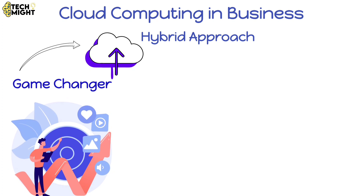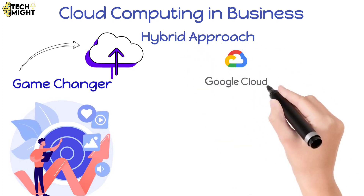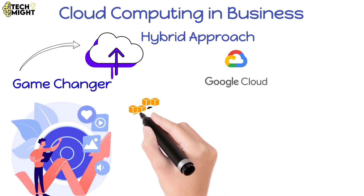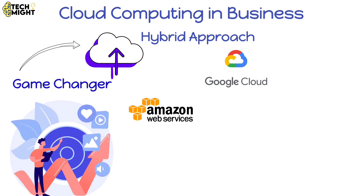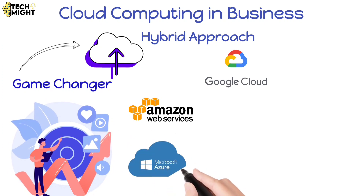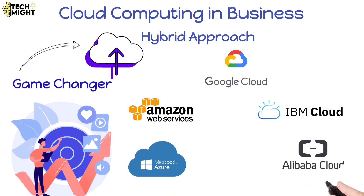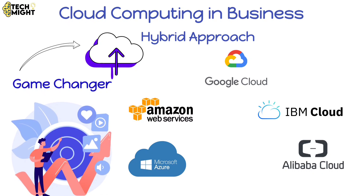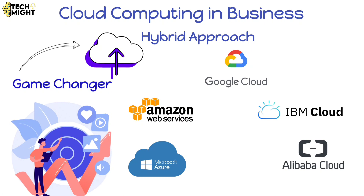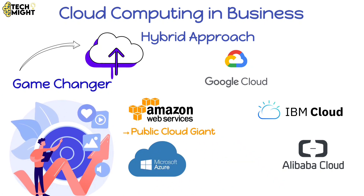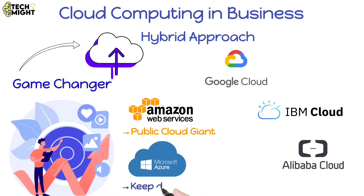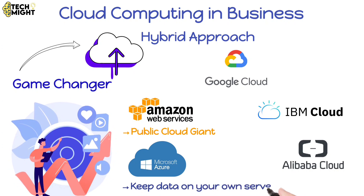When it comes to the big players, we have names like Google Cloud, Amazon Web Services (AWS), Microsoft Azure, IBM Cloud, and Alibaba Cloud — each offering its own unique features and benefits. For instance, AWS is a public cloud giant with a pay-as-you-go model, while Azure lets you keep some data on your own servers.